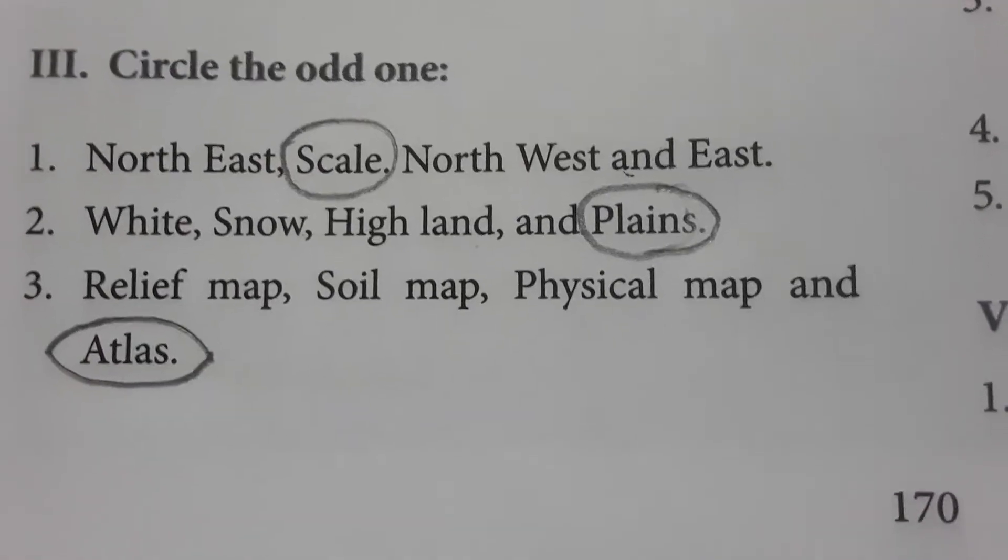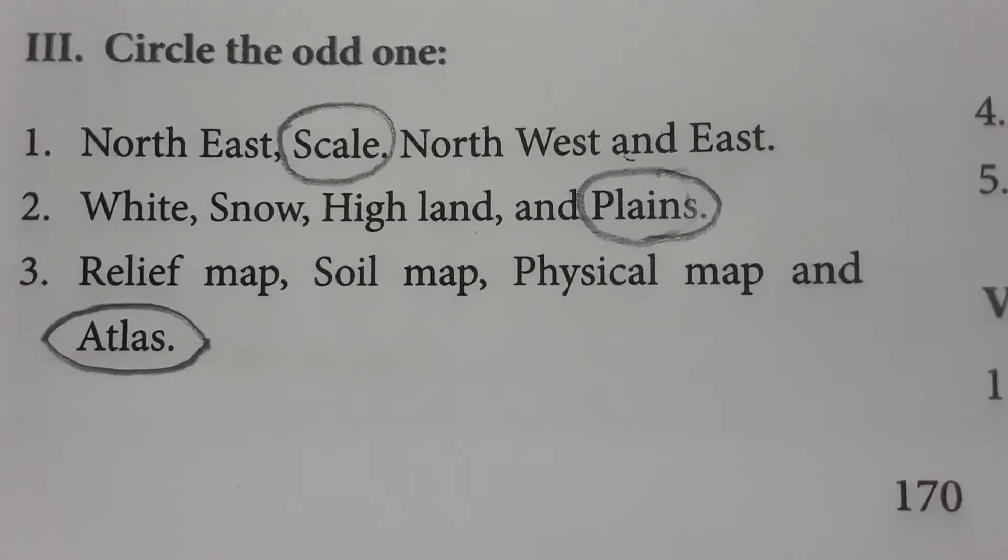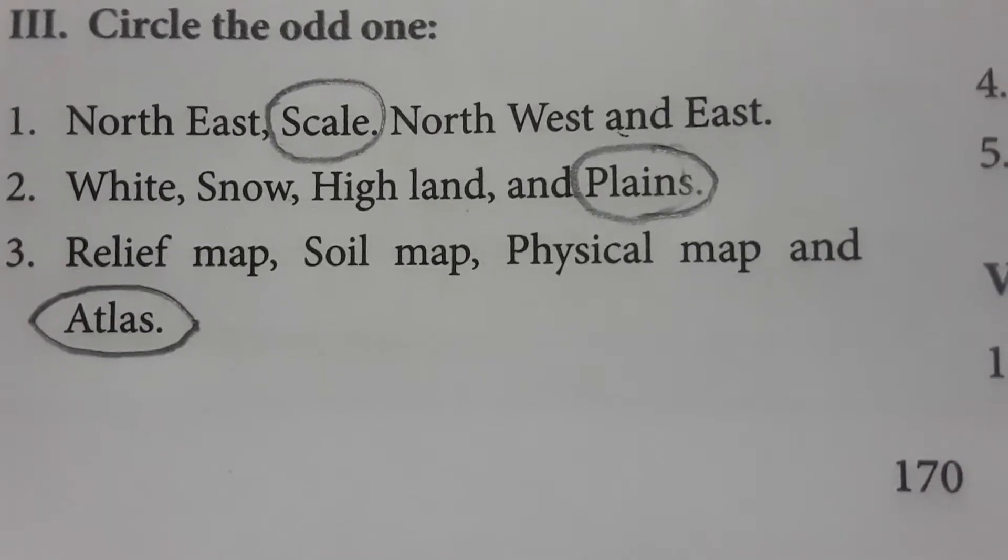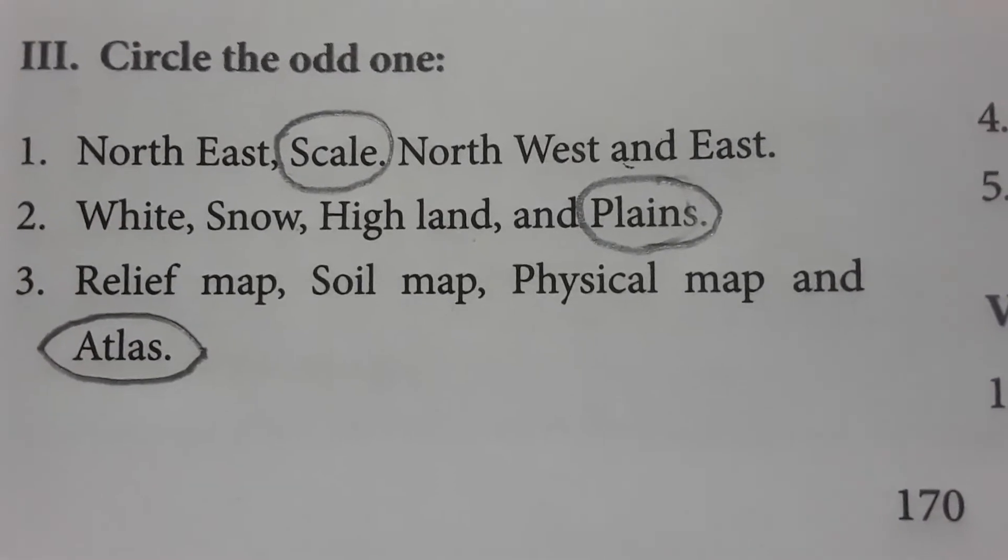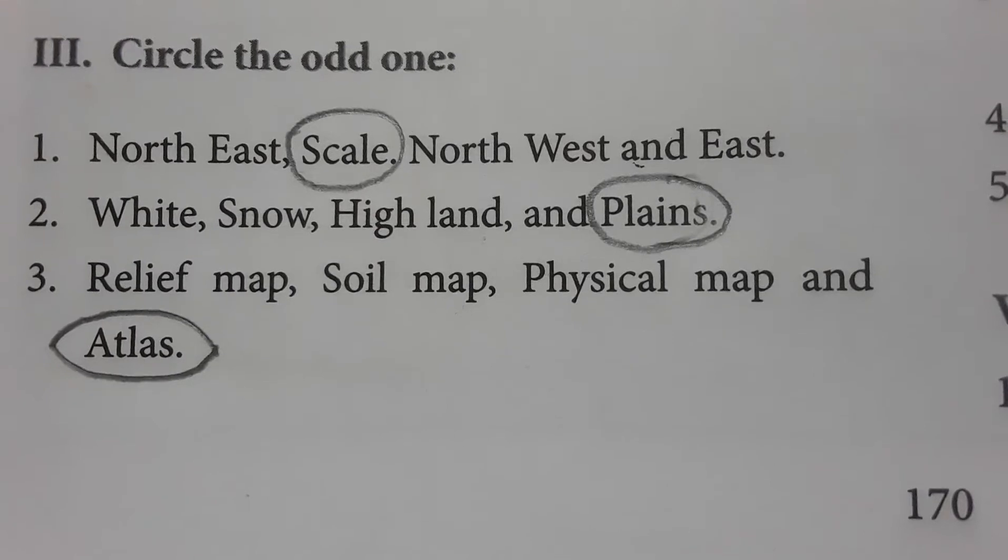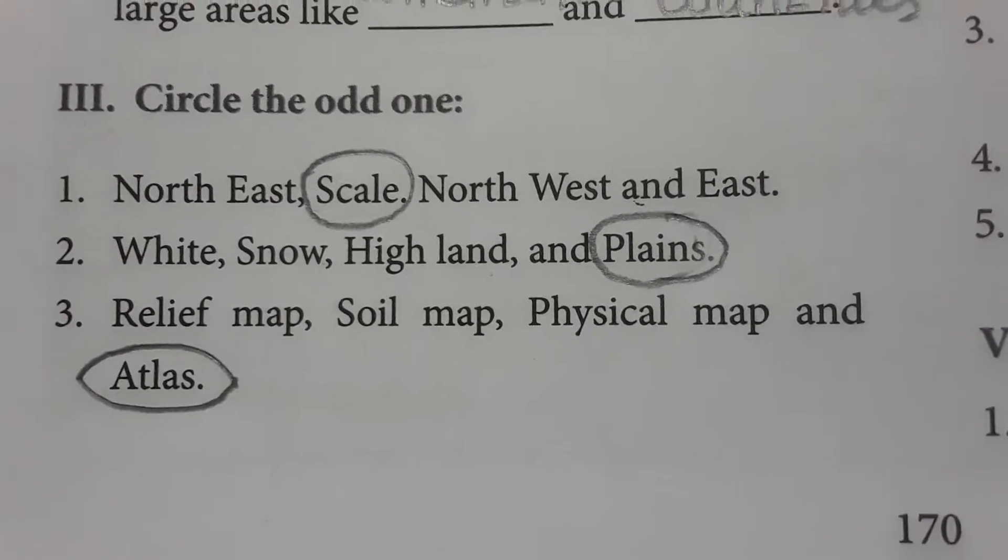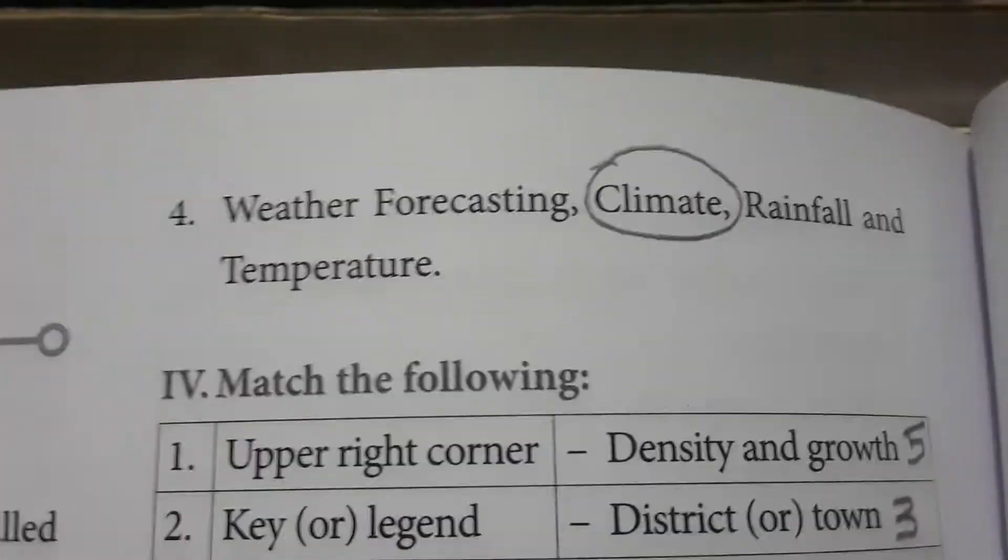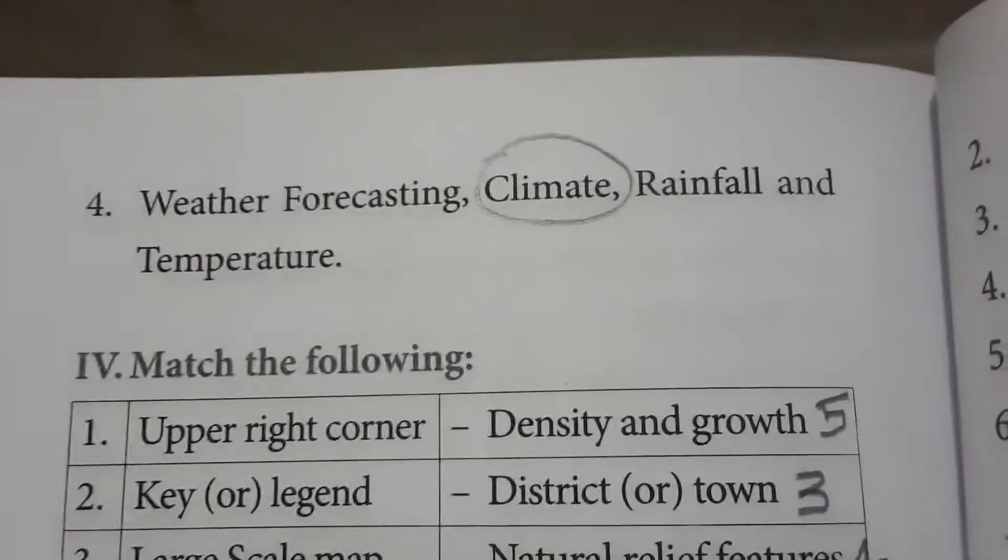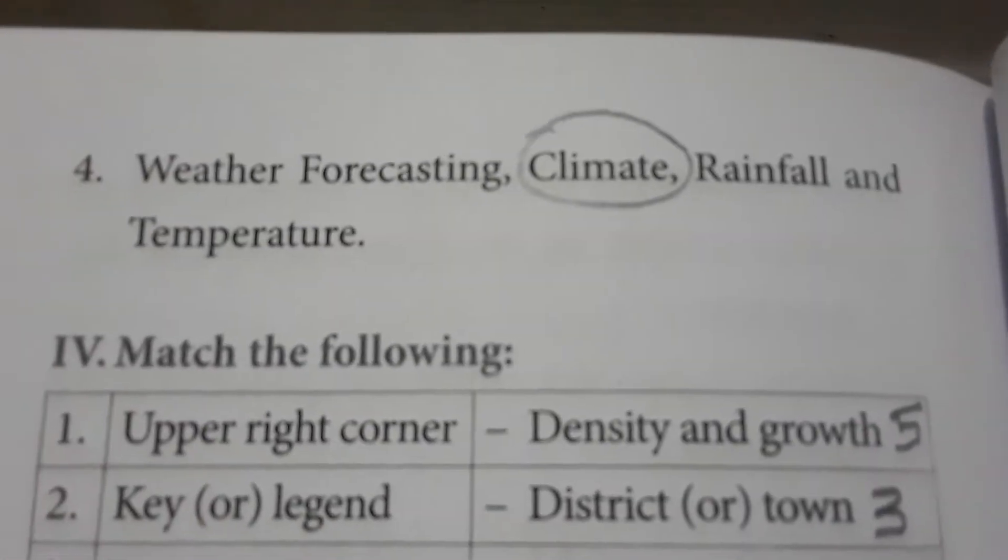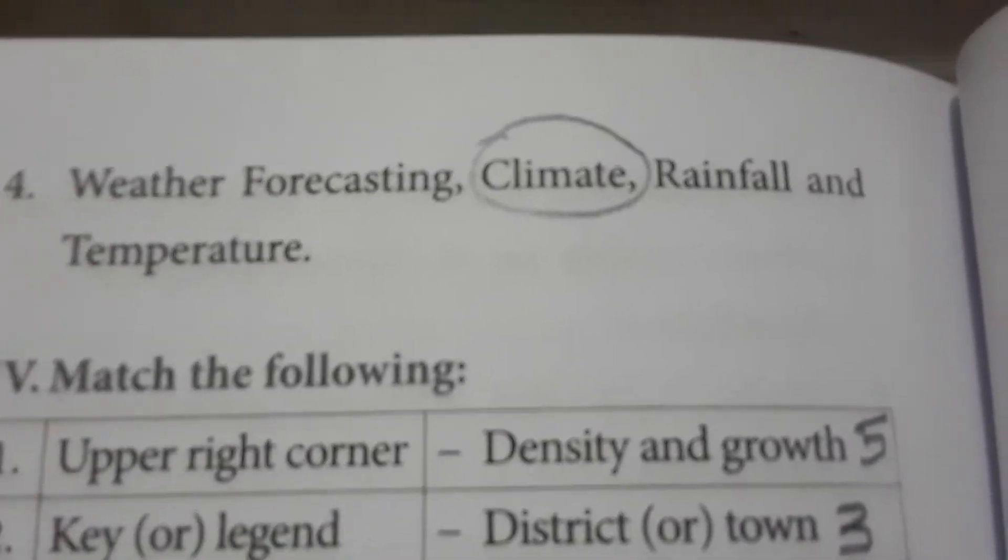Relief map, soil map, physical map, and atlas. Relief map, soil map, and physical map all stand for different types of maps, whereas atlas is different from maps. So atlas is the odd one. Weather forecasting, climate, rainfall, and temperature. Weather forecasting is about rainfall amount and temperature, whereas climate is the collective term. So climate is the odd one.